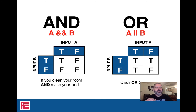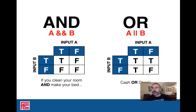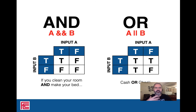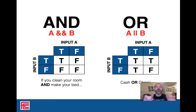OR is kind of the opposite. OR is only false when both inputs are false. For example, 'I accept cash or check.' If you have cash but no check — fine. No cash but a check — fine. Both cash and a check — also fine. The only problem is if you have neither. We're talking about inclusive OR here. The only time the expression is false is when both sides are false.